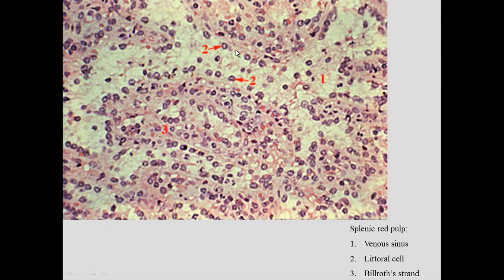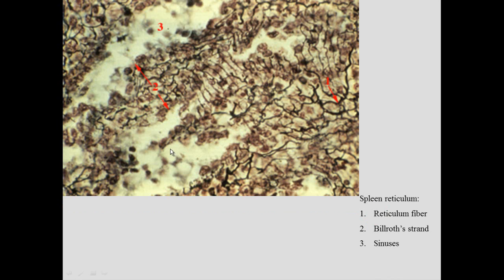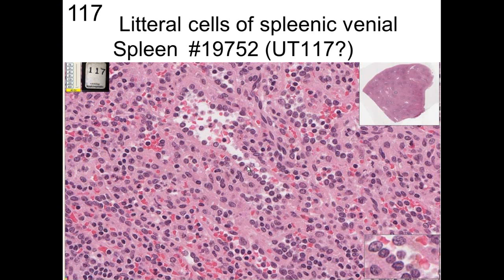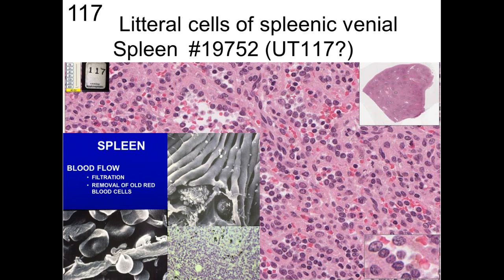A splenic cord sits between blood sinuses. A reticular network is present within the cords but not within the venous sinuses, since that would clog them. The sinuses are lined by littoral cells — endothelial cells with macrophages nearby. Red blood cells must squeeze through the littoral cells to re-enter the bloodstream. When red blood cells become less pliable with age, they linger too long, cannot squeeze through the littoral cells, and are consumed by macrophages.